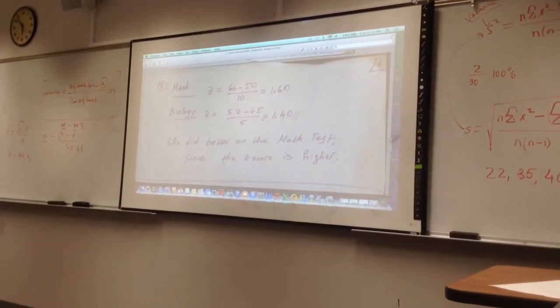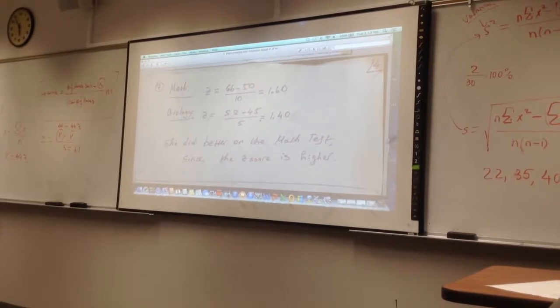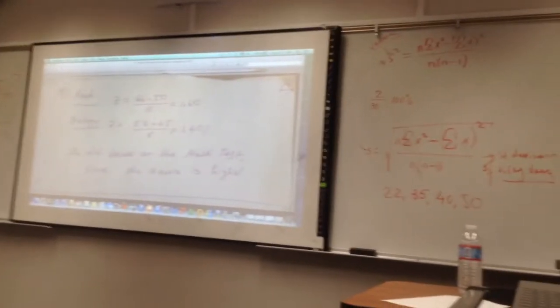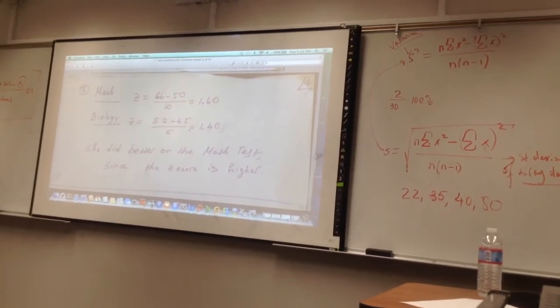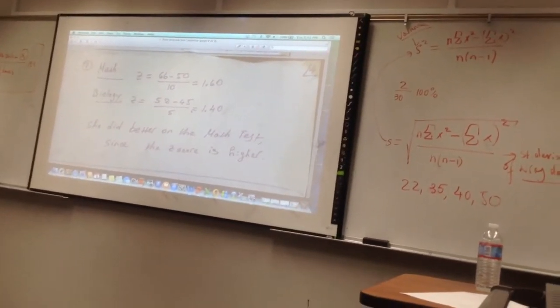She took a test with a mean of 50 and standard deviation of 10, and also scored 52 in the biology test which has a mean and standard deviation. In which test did she do relatively better and why?